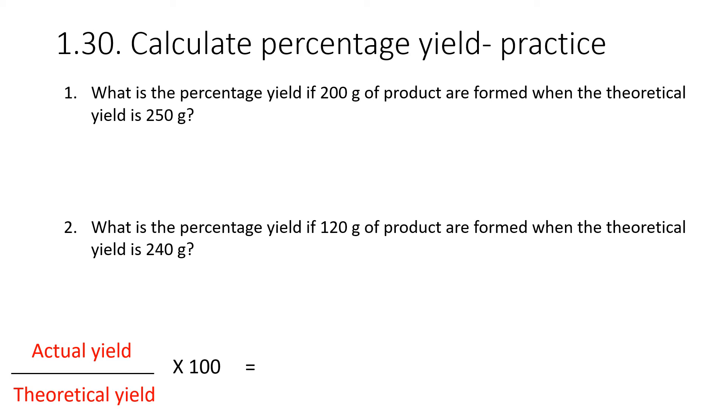So let's do a little bit of practice. Question one: what is the percentage yield if 200 grams of product are formed when the theoretical yield is 250? So the 200 grams is our actual, and our 250 is the theoretical. So we're going to do 200 divided by 250 multiplied by 100. This will be 80%.